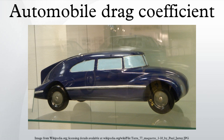Partial grille block: The front grille of a vehicle is used to direct air directly into the engine compartment. In a streamlined design the air flows around the vehicle rather than through. However, the grille of a vehicle redirects air flow from around the vehicle to through the vehicle, which then increases the drag. In order to reduce this impact, a grille block is often used.